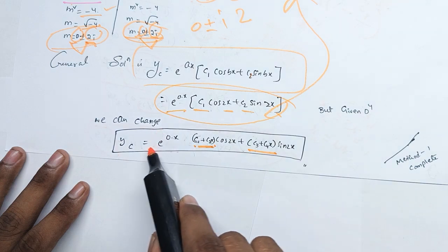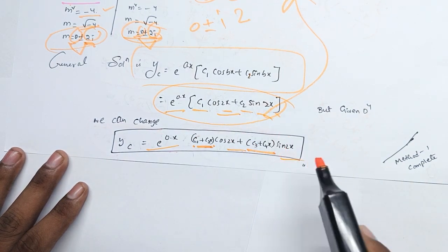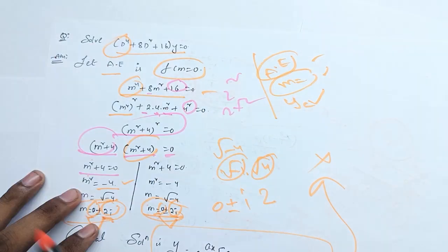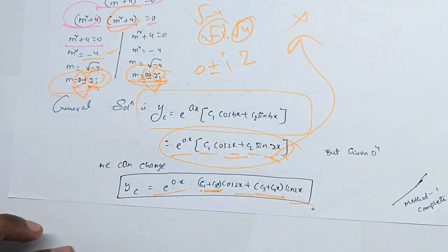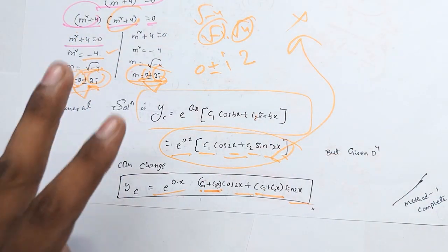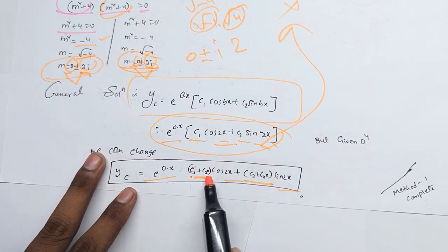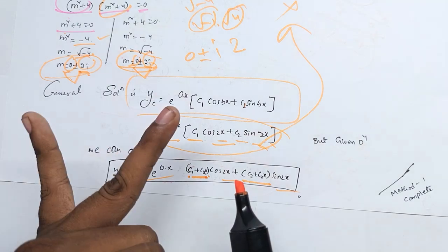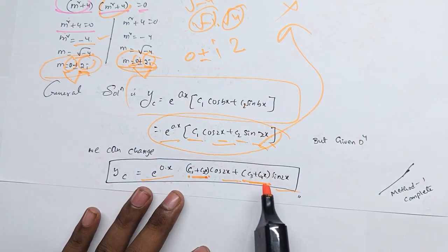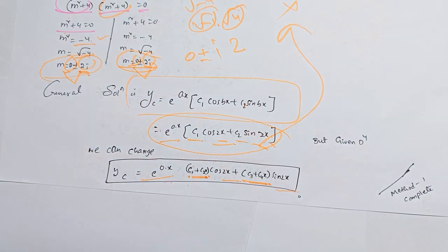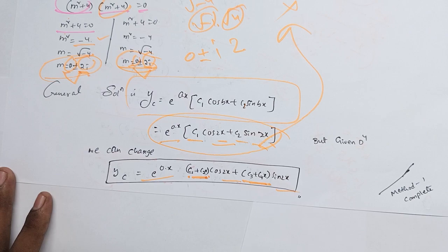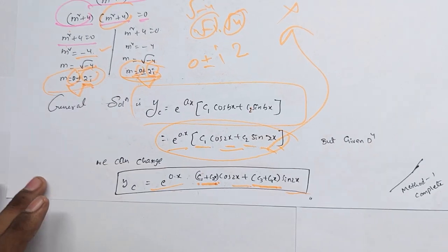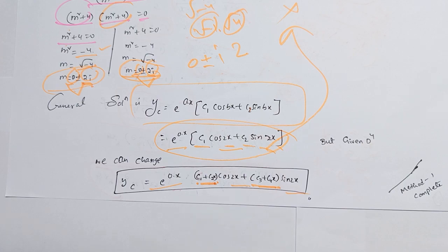Same value, same value — it depends on this problem. Now we have to observe this problem. If we want to see how much the power is, there is only 0. We have 0 to the power, we have c1 plus c2x, and c1 and c2. We have two: 0 to the power, c3 and c4. This method is very simple — I will continue.